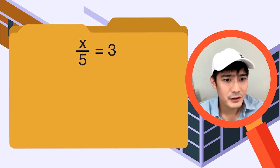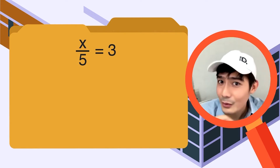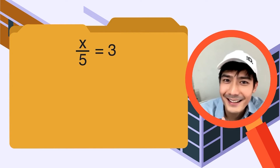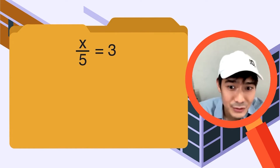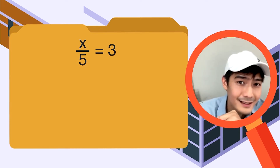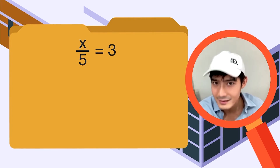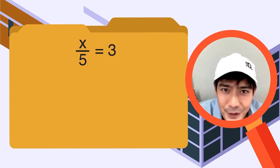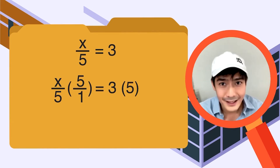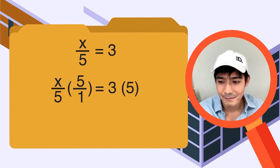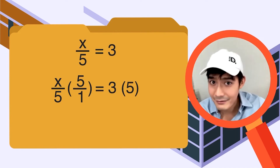Ano ba itong problem na ito — multiplication or division? X over 5 equals 3 — this is a divisional problem. So ang kailangan natin gawin, kunin yung inverse nito. Multiplicative inverse. Now let's solve for x. Paano ba natin i-isolate — we multiply yung value nung katabi nung x dun sa reciprocal nya. 1 over 5 yung katabi nung x technically. We get the multiplicative inverse of 1 over 5, which is 5 over 1. At yun din yung gagawin natin sa kabila — we multiply it with 5 over 1, or simply 5. X over 5 times 5 over 1 gives us x, and then 3 times 5 is 15.